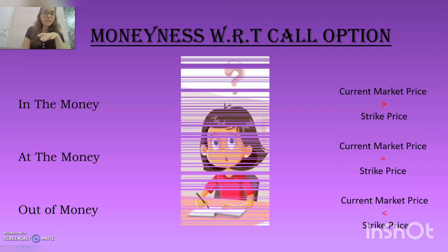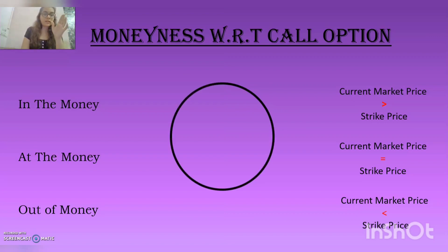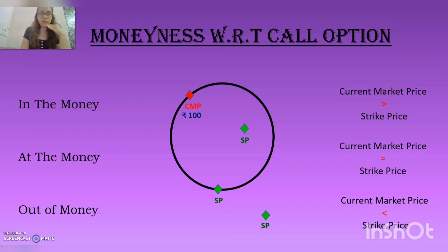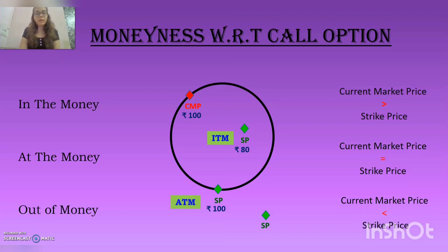Let's get into a diagram. Assume there is a circle where the periphery or border represents the current market price, and we have three strike prices for each situation. With a current market price of 100 and a strike price of 80, the current market price is more than the strike price — this is called an 'in the money' option. With a strike price of 100, the current market price equals the strike price — this is 'at the money,' shown on the border of the circle. If the strike price is 120, the current market price is less than the strike price — this is 'out of the money.'